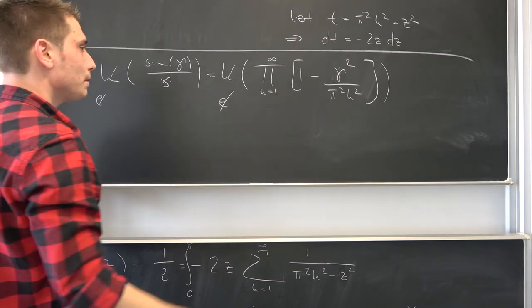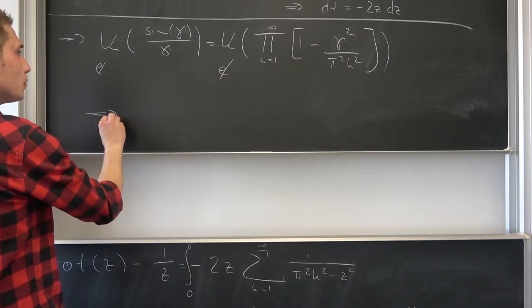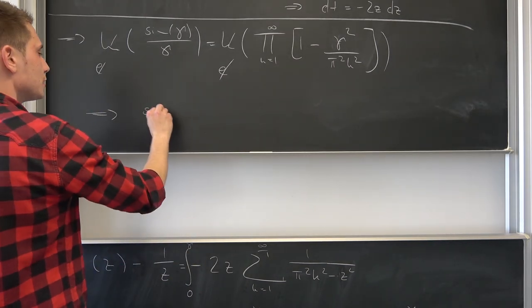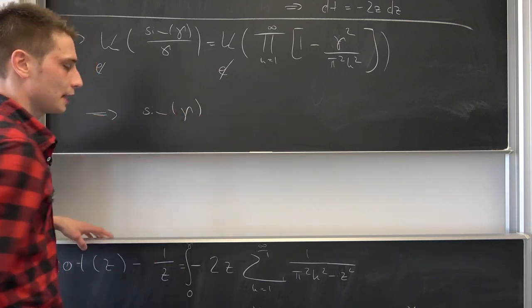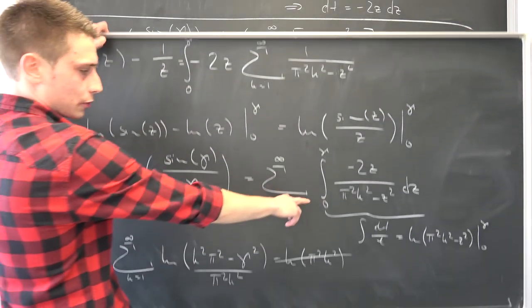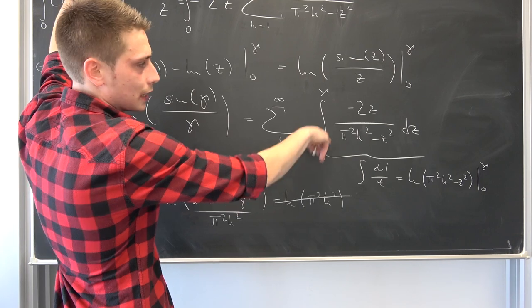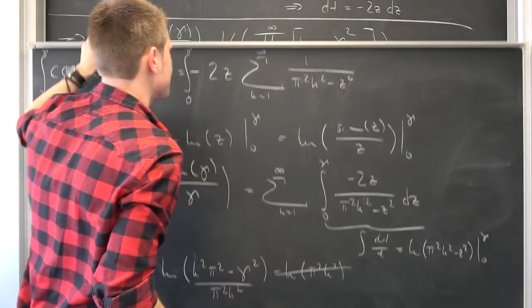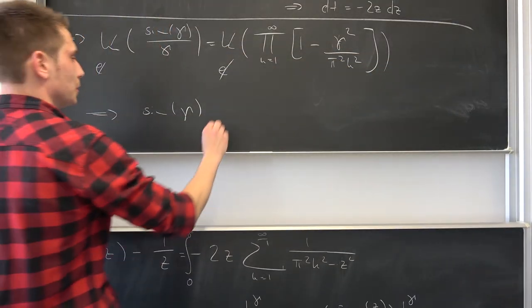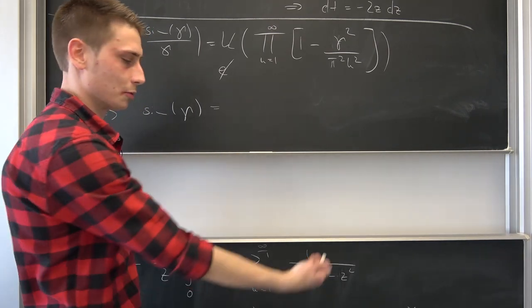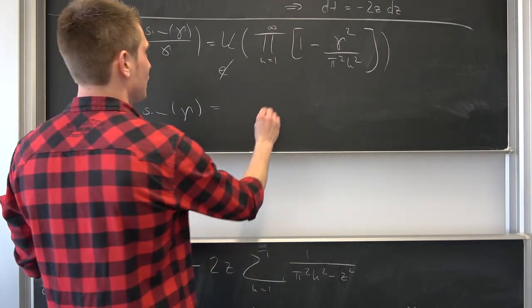Multiplying both sides by gamma under the condition that it's not equal to zero, then our sine of gamma is not equal to zero actually because it's the upper bound of an integral so it's strictly greater than zero. Hey cool, here's a nice argument right there. I'm always good at finding arguments for something not being equal to zero. I'm such a machine. Gamma times our infinite product of 1 minus gamma squared over pi squared times k squared.